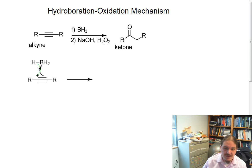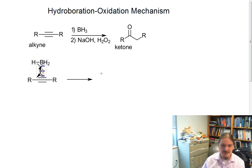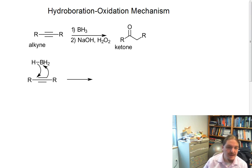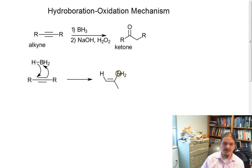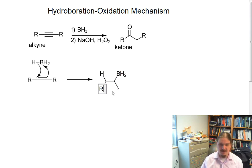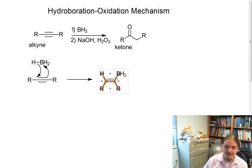Concerted addition of hydrogen and boron to the alkyne. And because that addition is concerted, we can think about the hydrogen and boron ending up attached to the same face, so they are cis to each other. This is the hydroboration step.